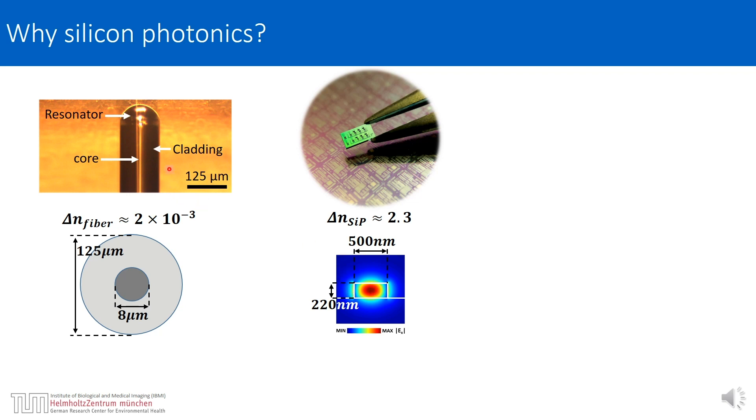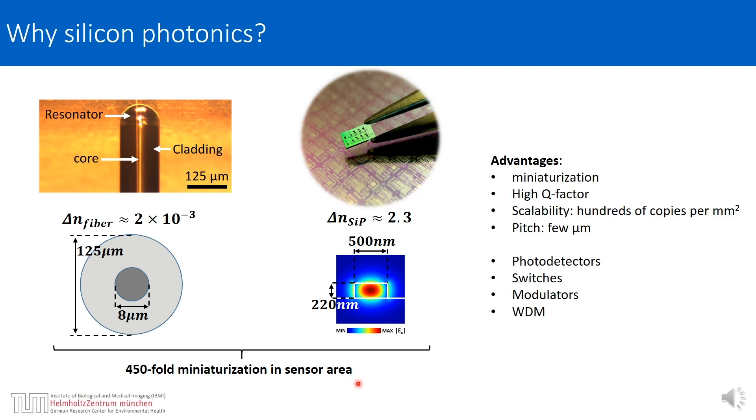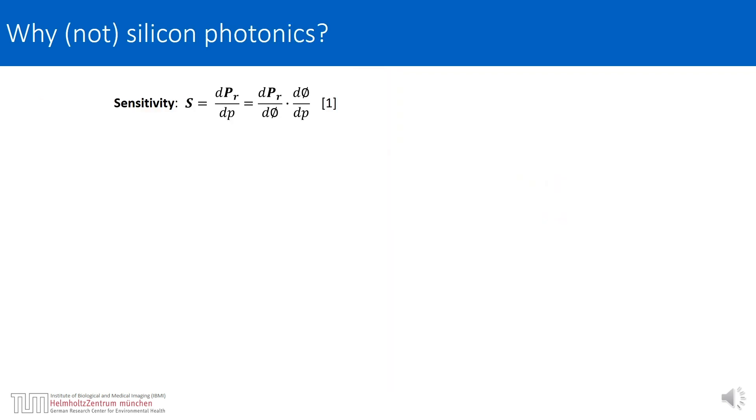If you are to realize this resonator in the silicon photonic platform, we would expect 450-fold miniaturization in sensor area. Additional advantages of the silicon photonics platform are the availability of active components like photodetectors, switches, and different multiplexing schemes that can support parallel signal readout from large sensor arrays.